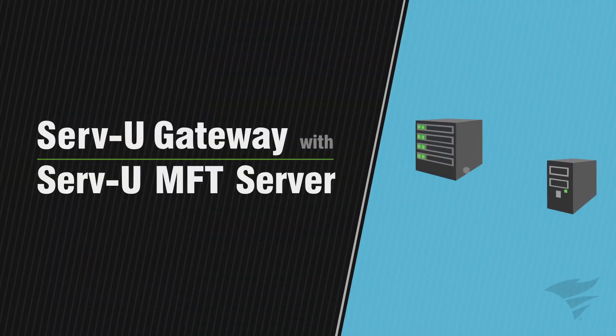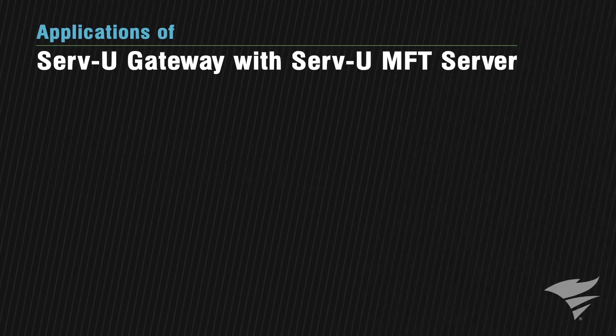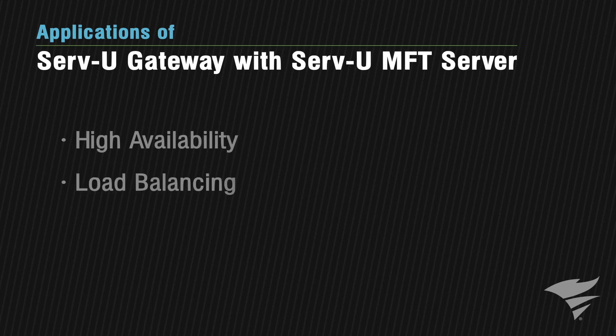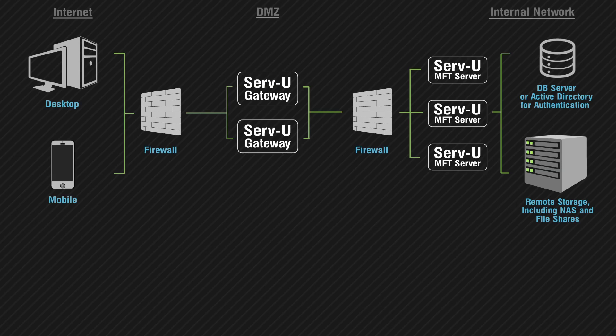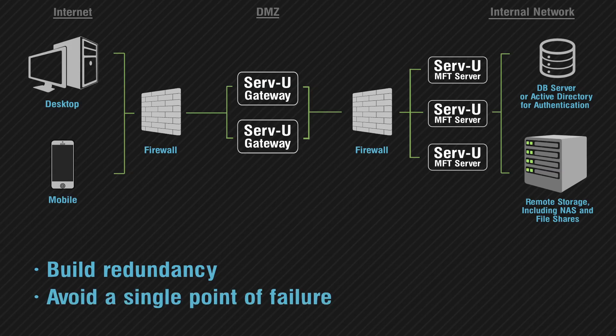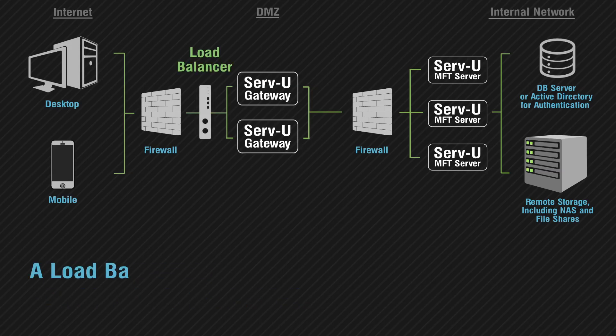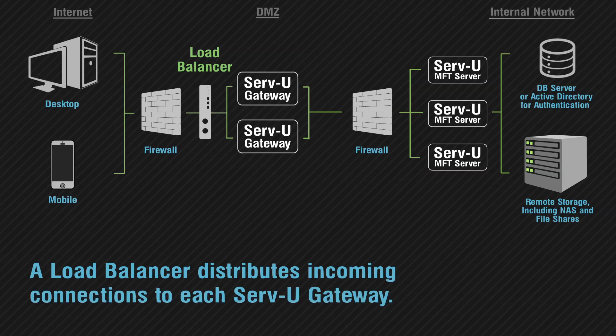Besides security reasons, Servview Gateway is used with Servview MFT server for some key IT requirements, especially for geographically dispersed networks — including high availability, load balancing, and disaster recovery. When multiple instances of Servview MFT server are configured for high availability, you can also deploy more than one Servview Gateway in the DMZ to distribute incoming connections and file transfer load. This helps build redundancy and avoid a single point of failure. A network load balancer is generally used to distribute incoming connections to each Servview Gateway to help scale the load to meet actual demand.